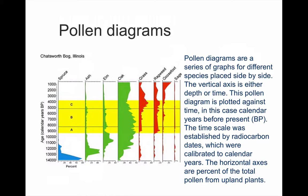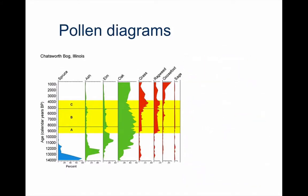The vertical axis is time. This particular core has clearly been dated well, probably using radiocarbon dating. Once this data is collected, a geologist will then attempt to identify different zones within the pollen diagram. The zones represent different periods of vegetational change.